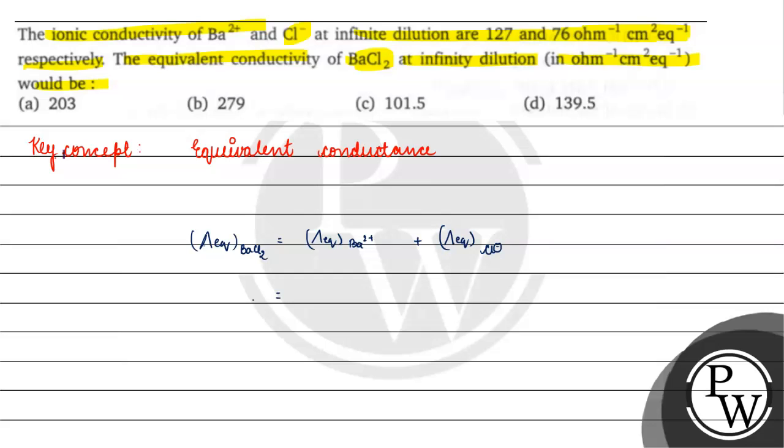So, we will add the equivalent conductance of Ba2+ and Cl- to get BaCl2. Here, if you look at this unit, this is equivalent conductance.